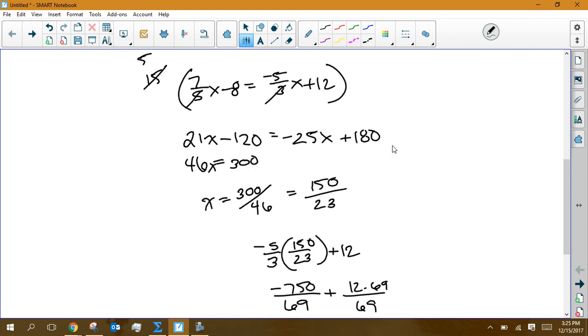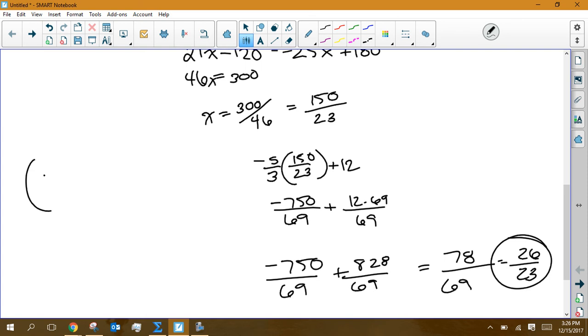150, 23, comma, 26, 23, and that is the best way to write our answer. Don't change it to decimals. Don't do any of that kind of stuff. Just leave it as 150 over 23, comma, 26 over 23. Hopefully that helps. You'll see one of those on the test.